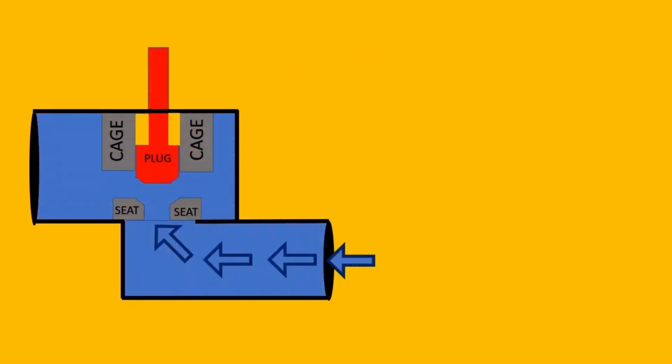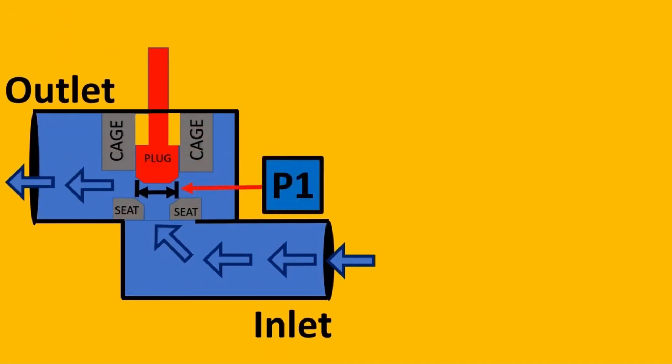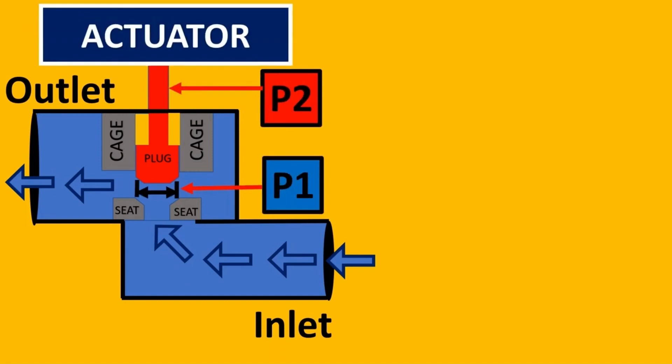Let us take this example of an unbalanced valve. So here's your cage plug and seat assembly. The flow is going from the inlet to the outlet and here you have the force P1 which is acting from the fluid.